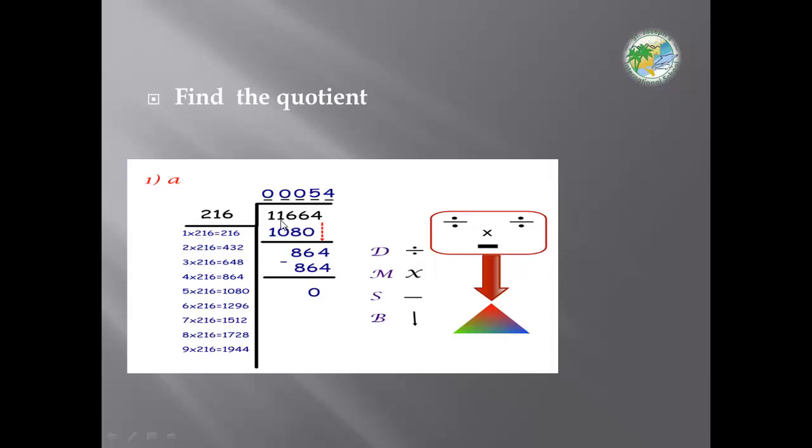Go to the dividend. Try 1 divided by 216, less than. Take another number. 11 divided by 216, less than. 116 divided by 216, less than. We write 0 and take 1166.